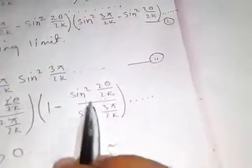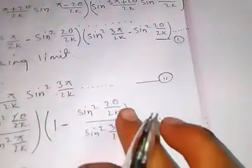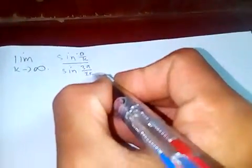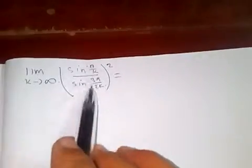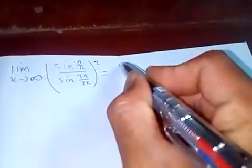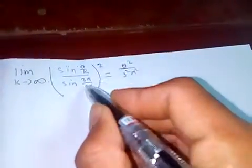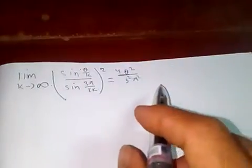Similarly, for the next factor, the limit as k tends to infinity of sine squared 3 theta over 2k over sine squared 3 pi over 2k — applying L'Hôpital's rule — gives theta squared over 3 squared pi squared times 4, so the limit is 4 theta squared over 9 pi squared.